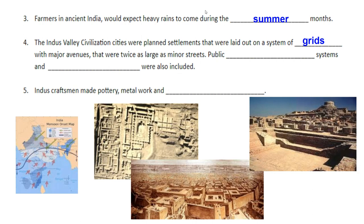Public drainage systems and a citadel — which I'm moving my cursor over right now in this picture on the far right-hand side — would also be included. A citadel would be a fortification where you would allow your troops to have a good overview of your community or your land, so that if enemies were approaching, you would be able to see them coming.